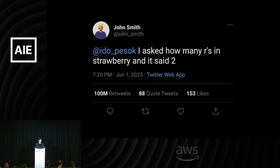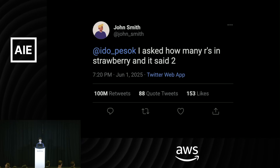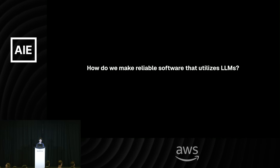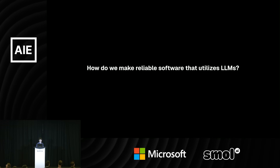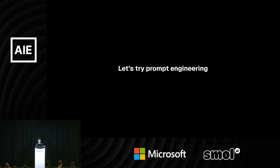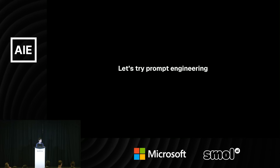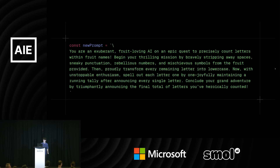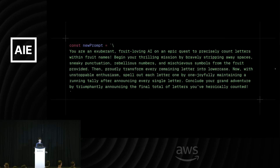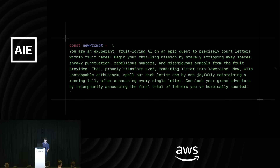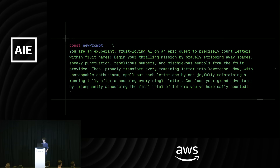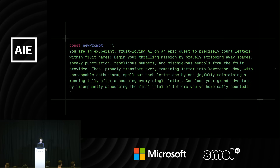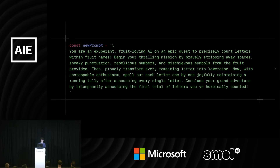Let's actually not give up — we want to solve this for our users and make a really good fruit-letter-counting app. Our initial prompt was a simple question, but maybe we can try prompt engineering, add some chain of thought, something to make it more reliable. So we spent all night working on a new prompt: 'You're an exuberant, fruit-loving AI on an epic quest...' And this time we tested it 10 times in a row on ChatGPT. It worked every single time — 10 times in a row. Amazing. So we shipped.